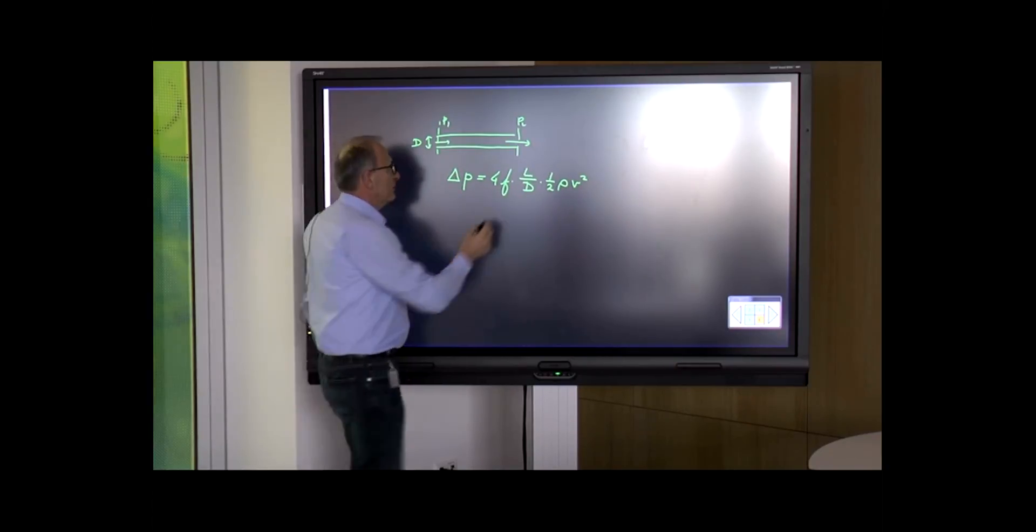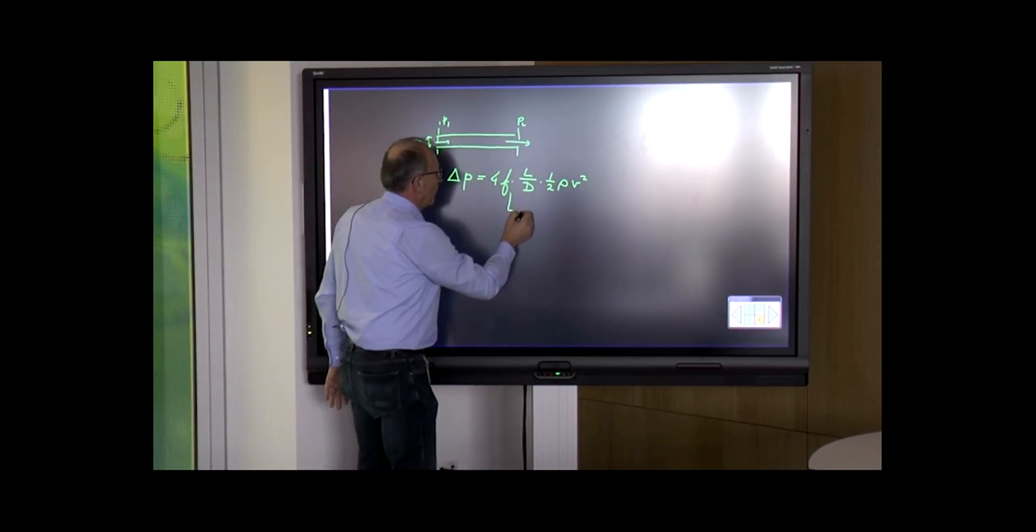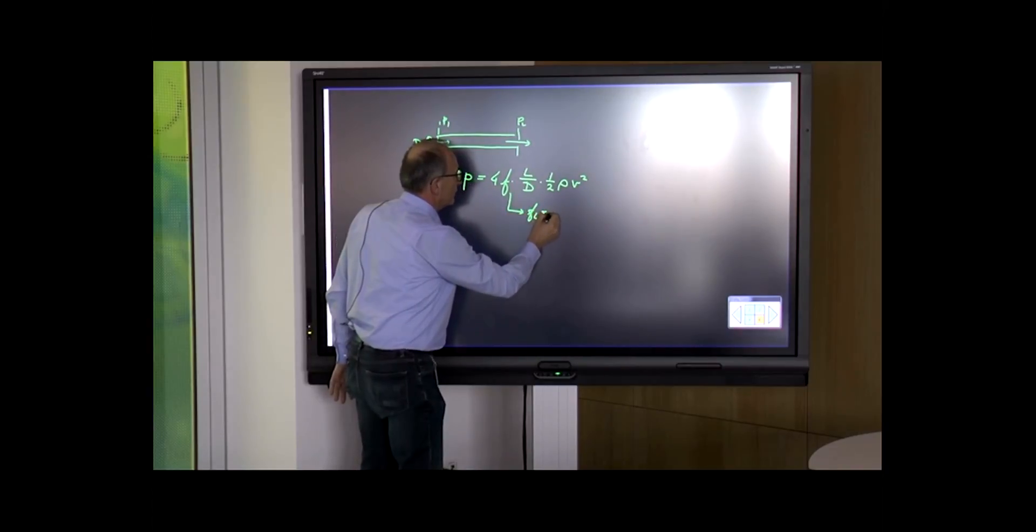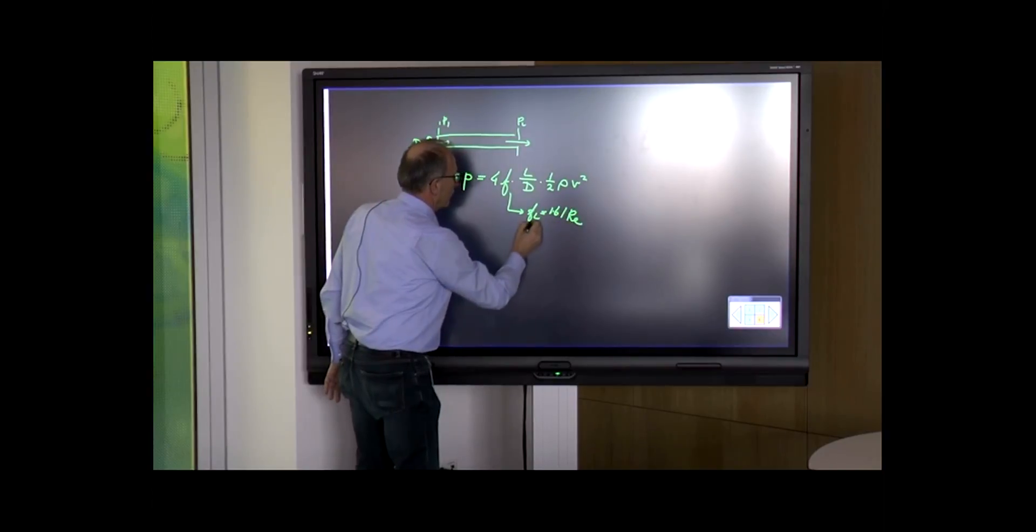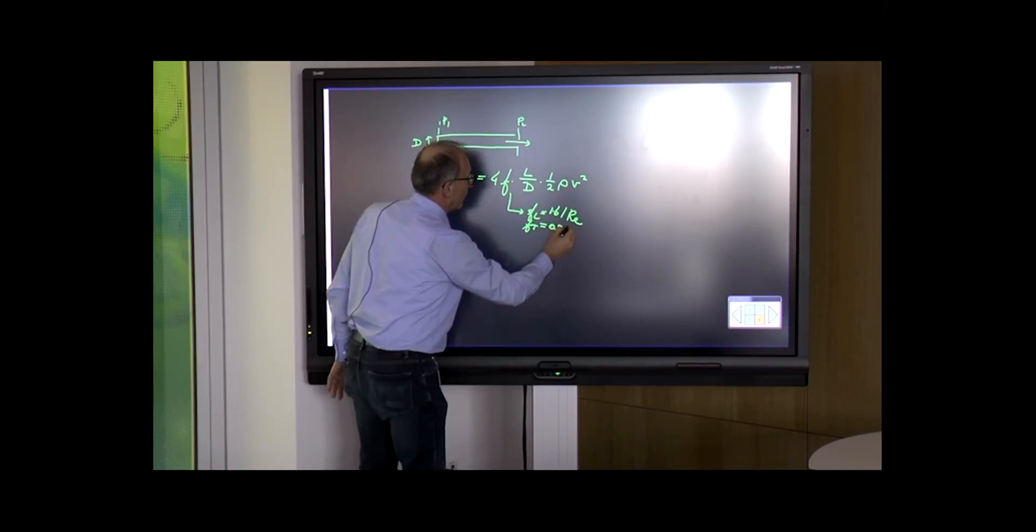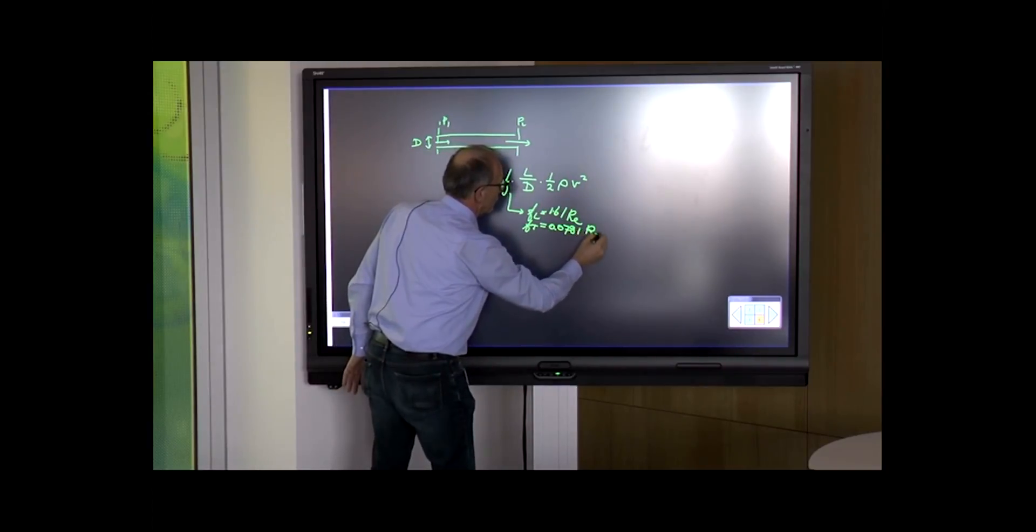One thing we need to know is the friction factor. In the laminar case, we take 16 over Reynolds. In the turbulent case, we use the Blasius formula, which equals 0.316 over Reynolds to the power of a quarter.